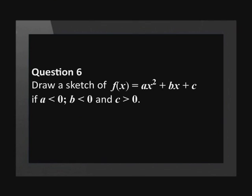Question 6 is a different way of asking us to draw a sketch of a function. It does not give any specific values for the variables, but if we know how each variable affects the shape and position of the function, we will be able to do it. Draw a sketch of f of x equals ax squared plus bx plus c, if a is less than 0, b is less than 0, and c is more than 0.